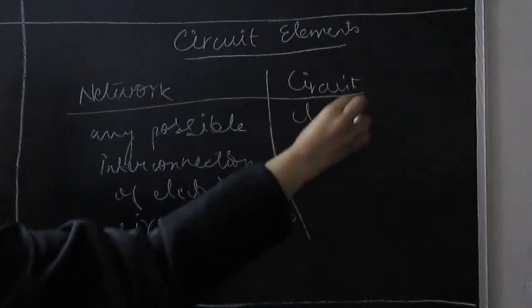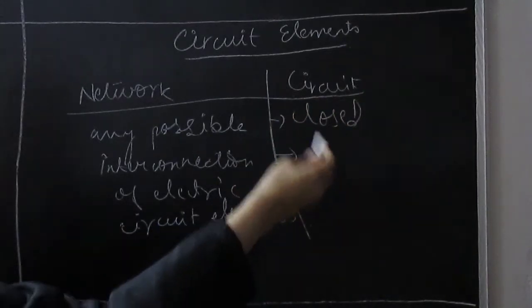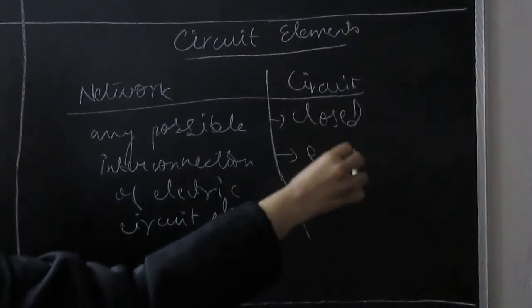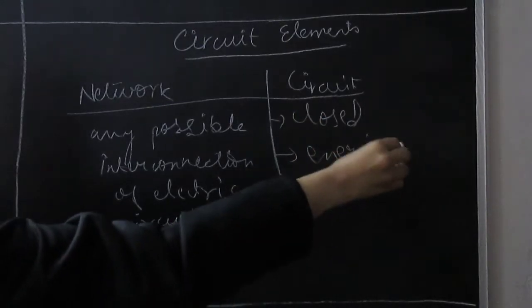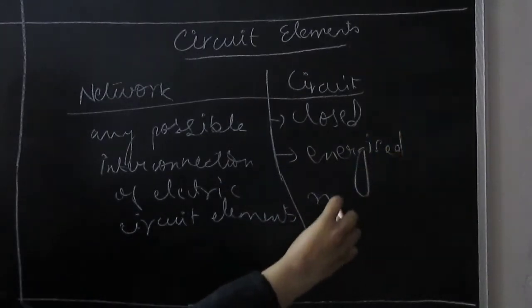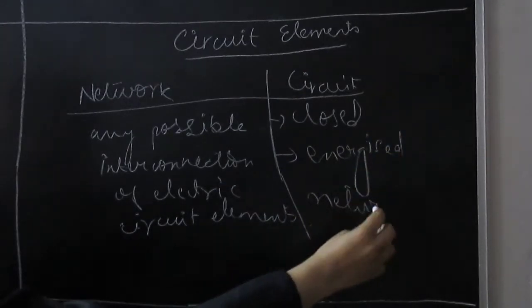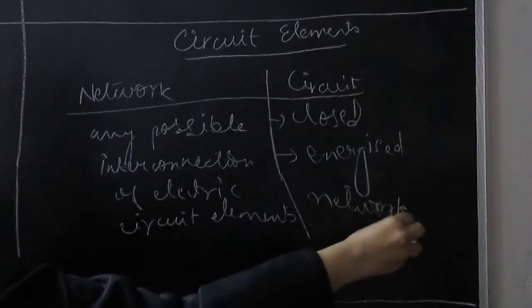First point: closed. Second point: energized. And of course, this network has become. So the circuit is a special type of network.